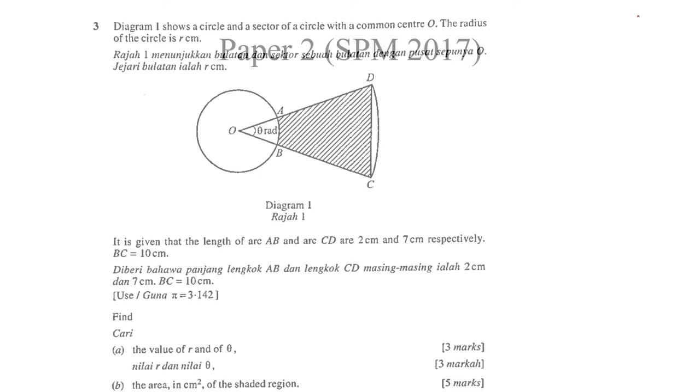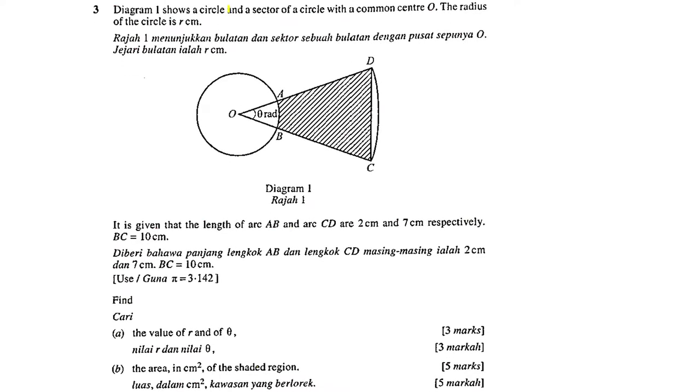SPM 2017. Diagram 1 shows a circle and a sector of a circle with common center O, and the radius of the circle is R. It is given that the length of arc AB is 2cm, arc CD is 7cm, and BC equals 10cm. From A to D is also 10cm.